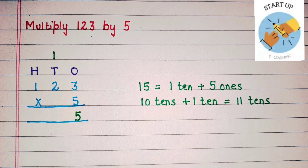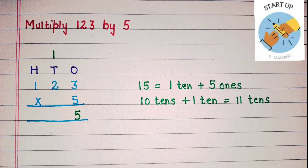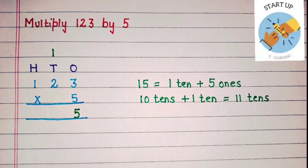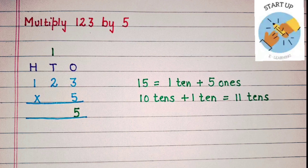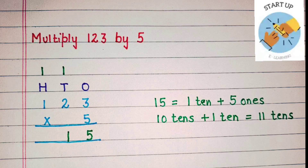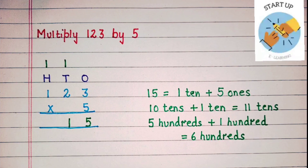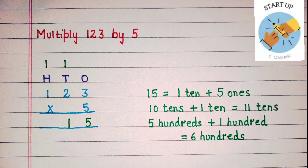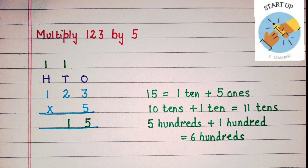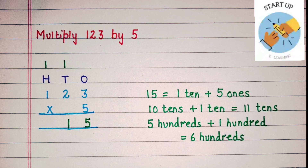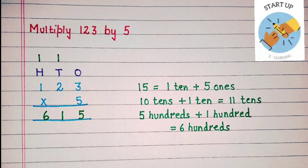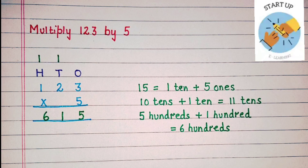Now let's multiply 5 by 2. 5 twos are 10. 10 tens plus 1 ten that was carried over is equal to 11 tens. 11 tens is equal to 1 ten plus 1 hundred. So we are going to write the 10's digit under 10's place and the 1 will be carried over. Now 5 will be multiplied by 1, the digit at the 100's place. 5 multiplied by 1 is equal to 5, plus 1 carried over. 5 hundreds plus 1 hundred is equal to 6 hundreds, so this 6 will be written under 100's place. The product of 123 and 5 is 615.